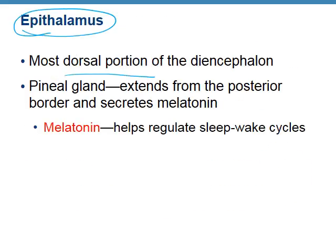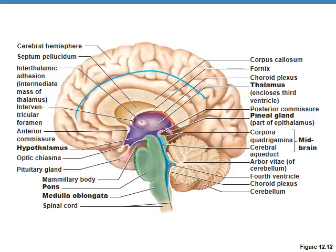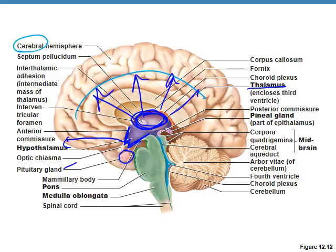The epithalamus is the dorsal portion of the diencephalon. Part of it includes the pineal gland, which secretes a hormone called melatonin that helps regulate your sleep and wake cycles — as melatonin level increases, it makes you sleepy. Some people take supplemental melatonin if they're having trouble sleeping. To recap: the cerebrum, the W-shaped hypothalamus with the pituitary, the egg-shaped thalamus relaying information to the cerebrum, and the epithalamus with the pineal gland.